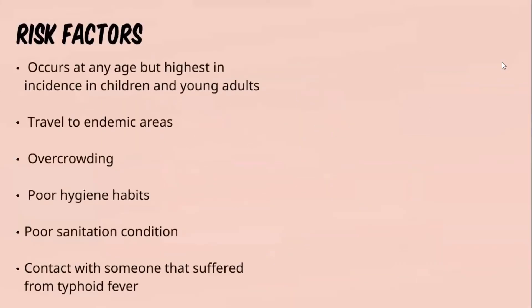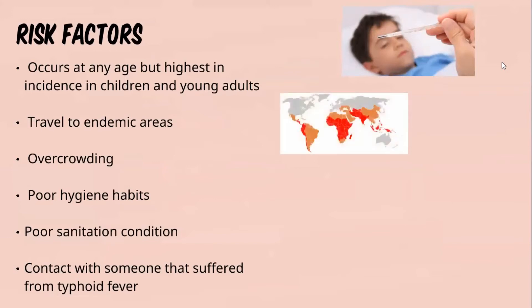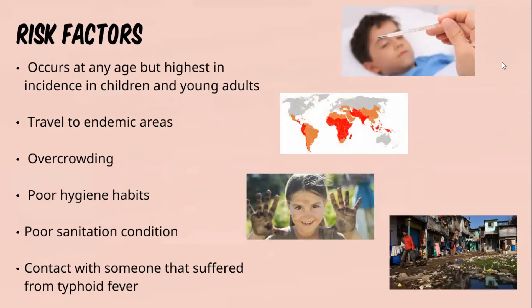Risk factors for typhoid fever include children and young adults, who are more susceptible, though it can occur at any age. Other risk factors include travel to endemic areas, overcrowding — where transmission can occur easily through direct or indirect contact — poor hygiene habits, poor sanitation, and contact with someone who has suffered from typhoid fever.